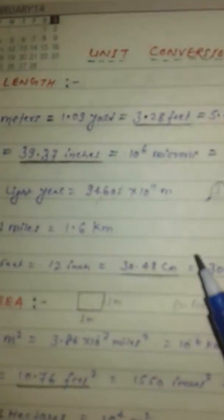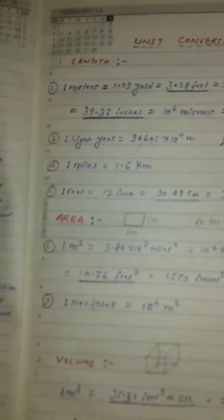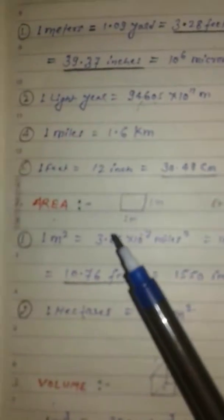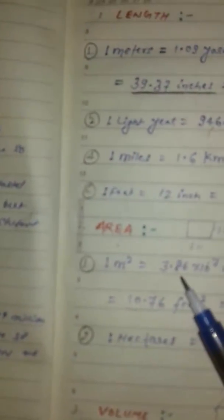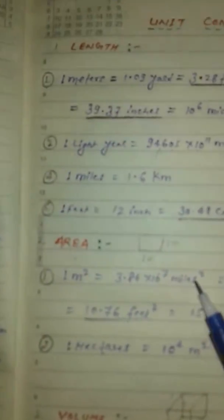Area: One meter square is the standard unit. One meter square is equal to 3.86 x 10 to the power minus 6 miles square, 10 to the power minus 6 kilometers square.